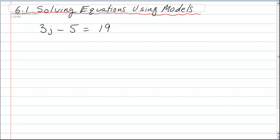So we have an equation here right now, it's 3j minus 5 equals 19, and what we want to do is we want to use models to represent that.